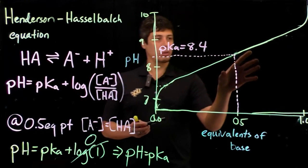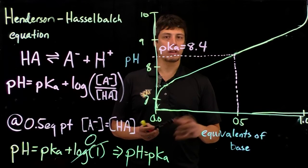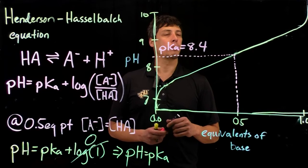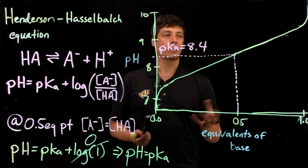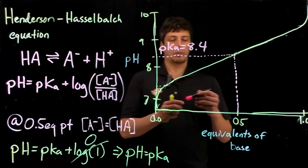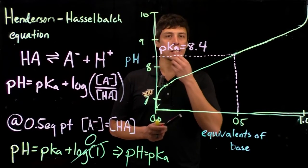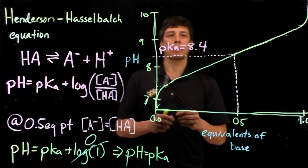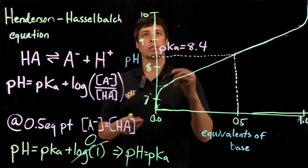Let's say we're using this weak acid or weak base here, since it has a pK of 8.4, as a buffer. What we're looking for then would be the buffering range.